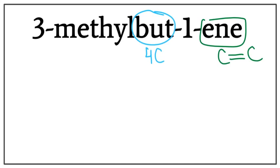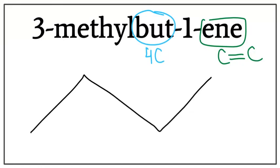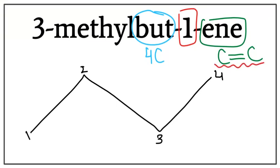Let's draw the four carbons. A trick to draw these is that you always count till one less than the number of carbons you want to draw: 1, 2, 3. Let's number them: 1, 2, 3, 4. This 1 tells us the location of the double bond present in the chain, which is between carbon 1 and carbon 2.